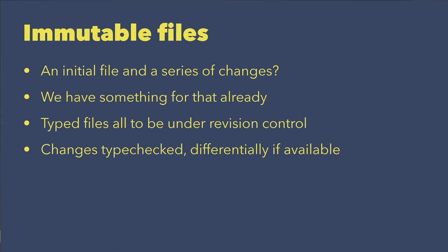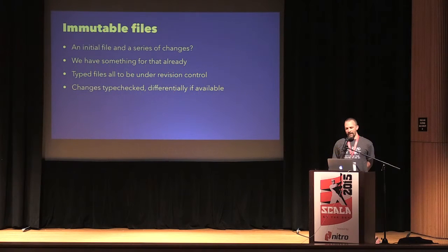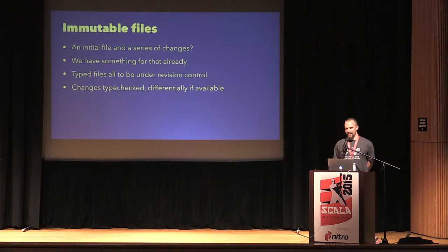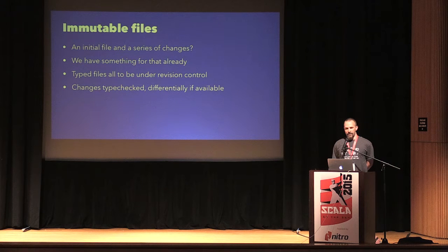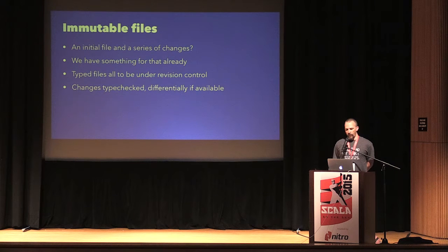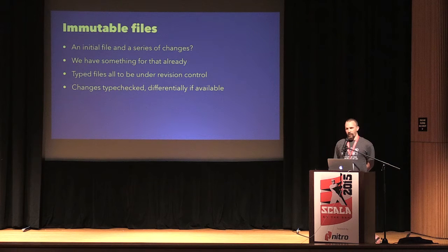Before we can do that, though, we need an intermediate step: immutable files. Which sounds kind of nuts, except that we use immutable files all day long. Probably everybody here uses the same system for immutable files — Git. Version control in general and Git in particular. Git is really just nothing more than an immutable file system: here's a hash, here's some data, and if you want to change it, I'll give you a different hash, keep track of that and the change. That's just what we need. So we'll integrate that into a virtual file system. Every time you write to something, you're going to be trying to do a Git commit, but you're also going to be up against enforcement of the type of the file.